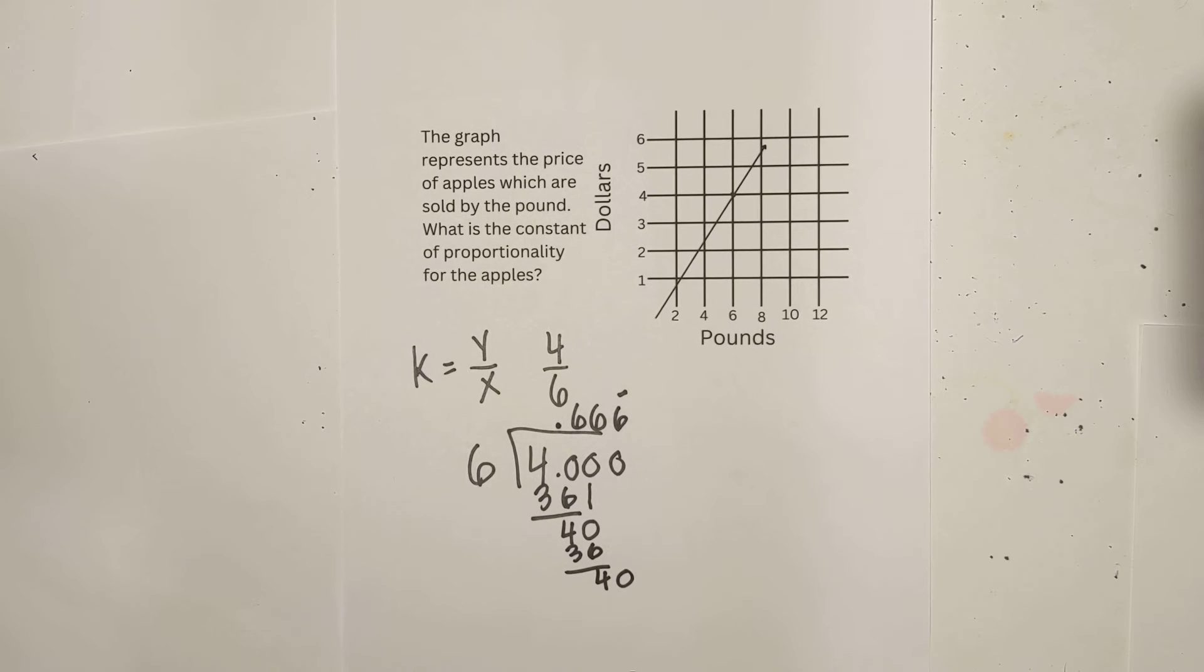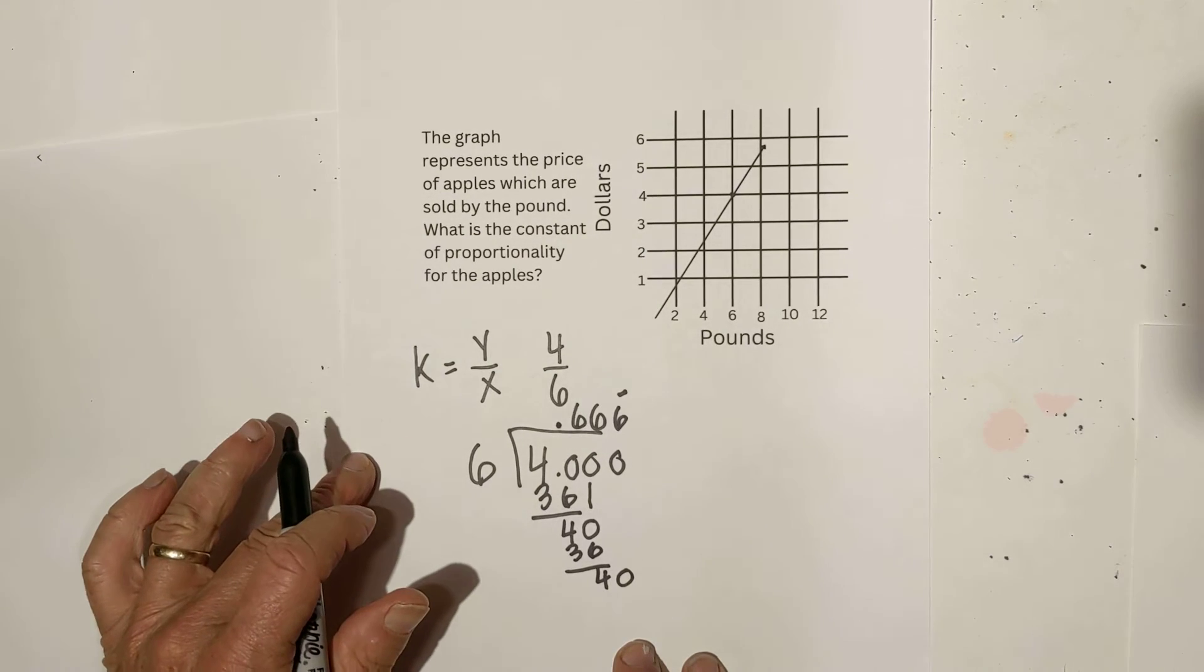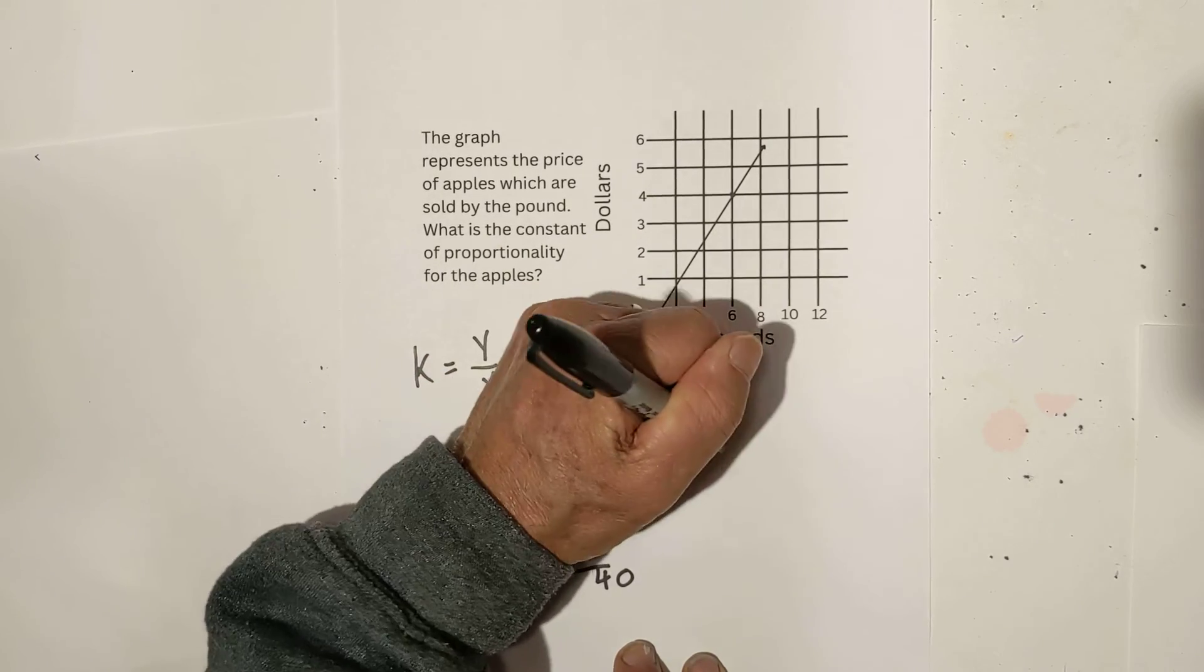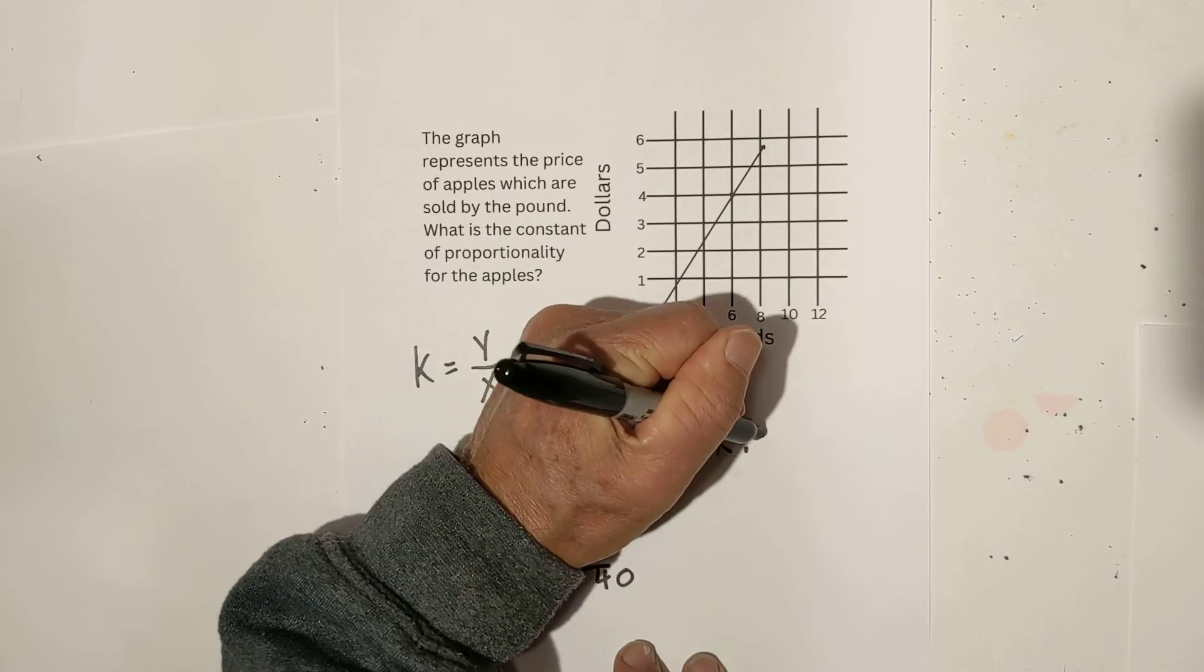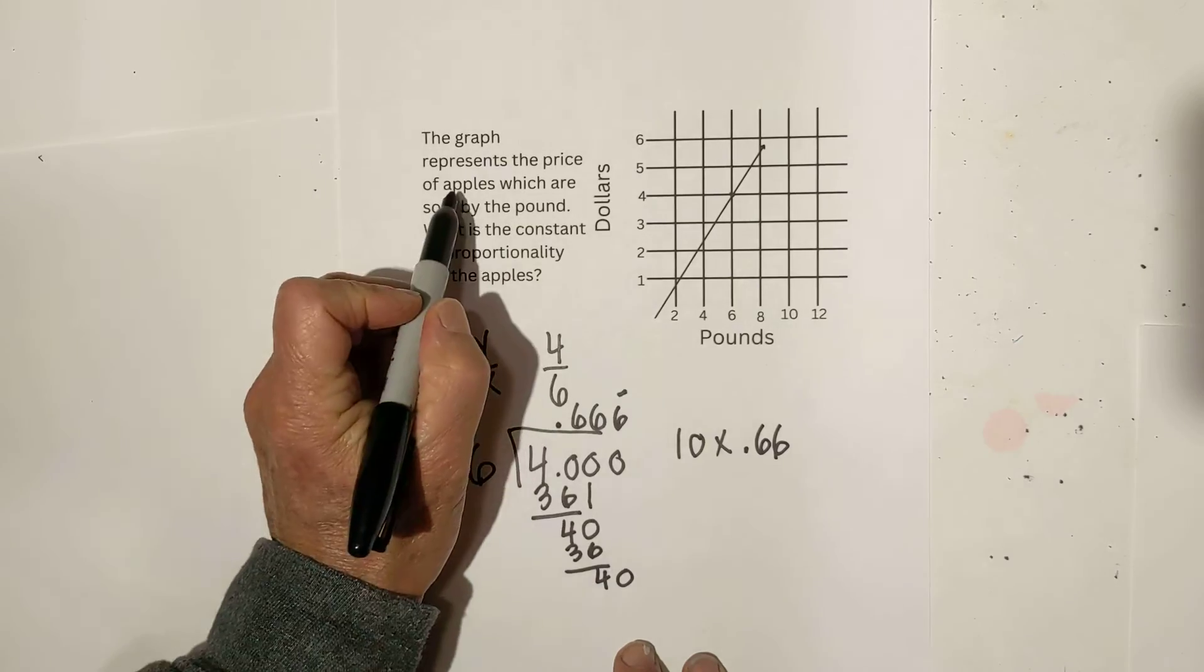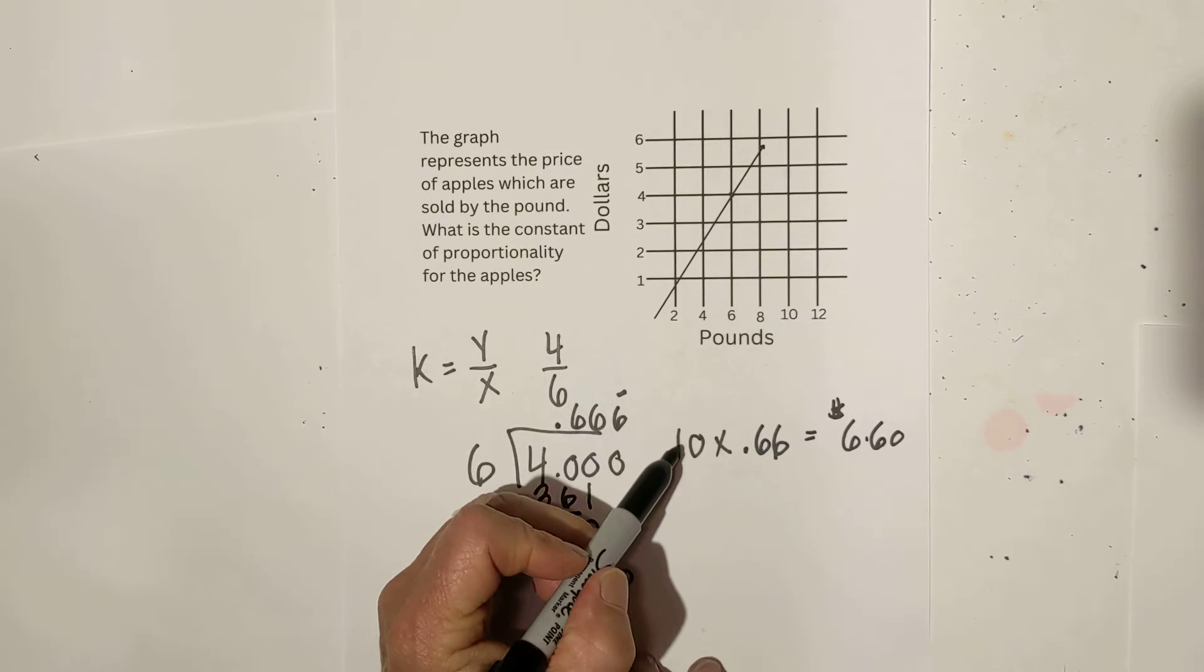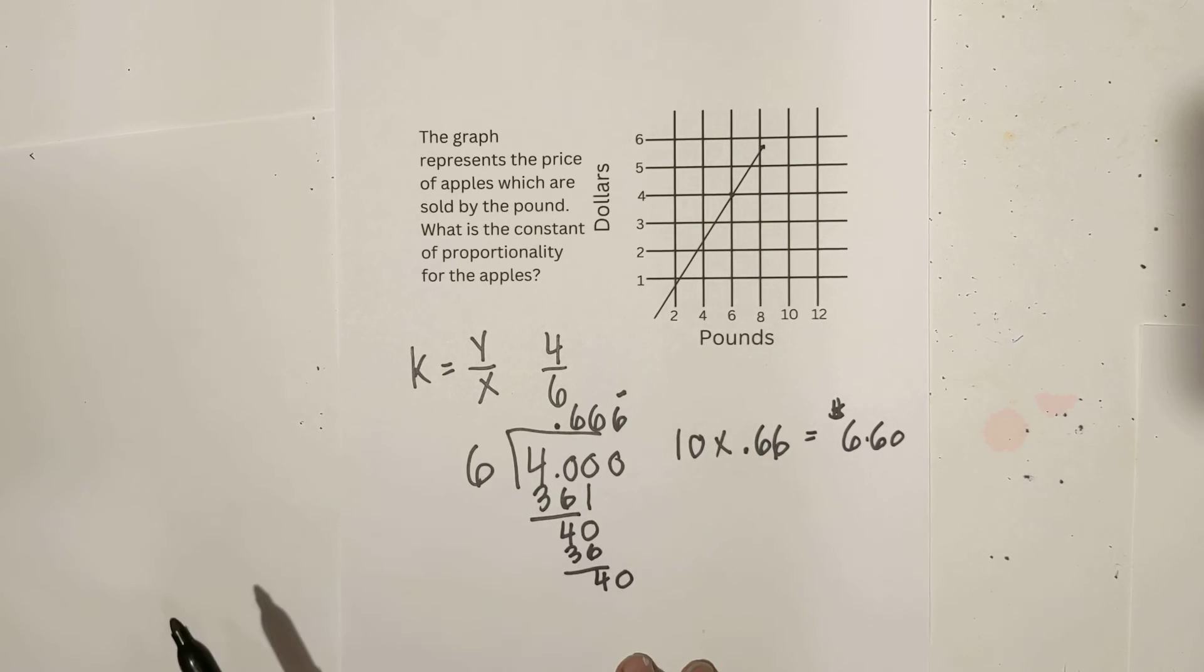That tells us that 1 pound equals 66 cents. So, again, what's that tell us? Say we go in this time and we buy 10 pounds. 10 pounds of apples. It's going to cost us $6.60 because I just multiplied 10 times 0.66.